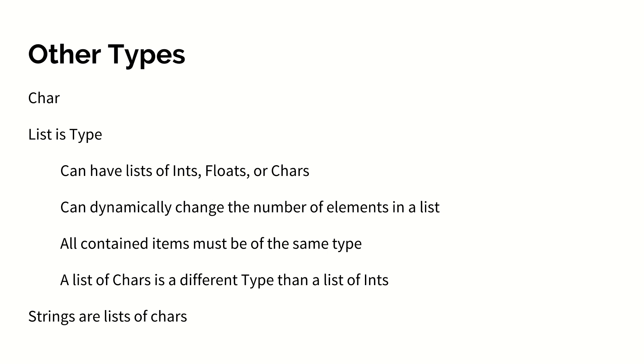Other basic data types in Haskell include the familiar char, as well as list. List is a type in Haskell that is dependent on what it contains. A list of ints is different than a list of integers is different than a list of chars. However, the number of items in a list can change dynamically. It's just that all items contained in a list must be of the same type. Furthermore, string is just an alias for a list of chars in Haskell.